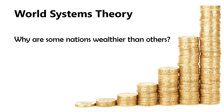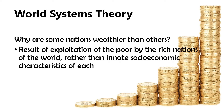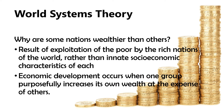Why are some nations wealthier than others? World systems theory seeks to answer this. It states that wealth inequality is the result of exploitation of the poor by the rich nations of the world, rather than innate social or economic characteristics. Economic development occurs when one group purposefully increases its own wealth at the expense of others. Wealthy countries achieve high levels of development by exploiting other regions, plundering their resources, using their people as cheap labor, and dominating their markets.